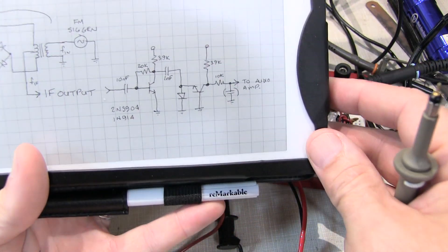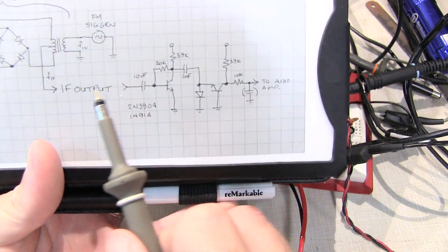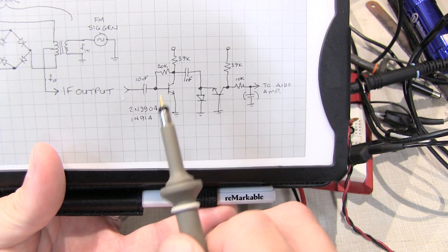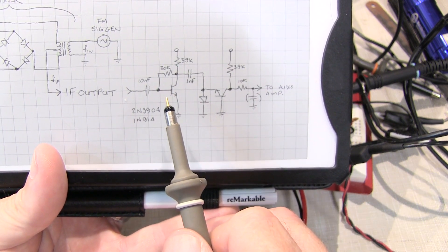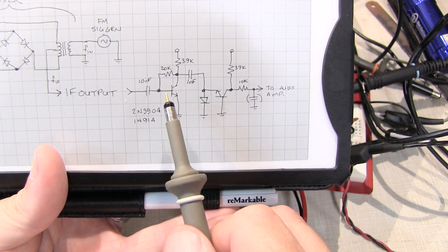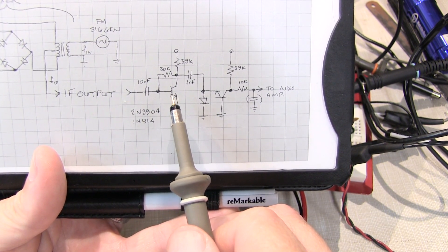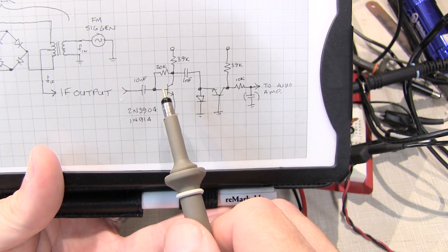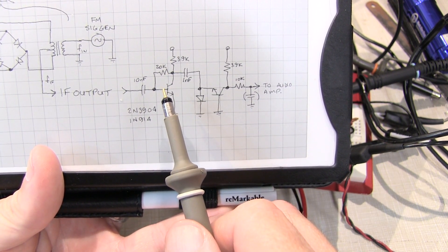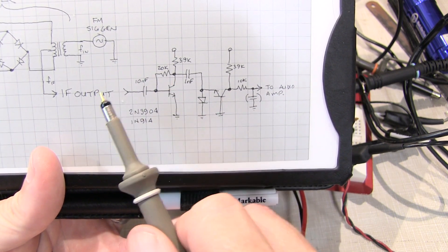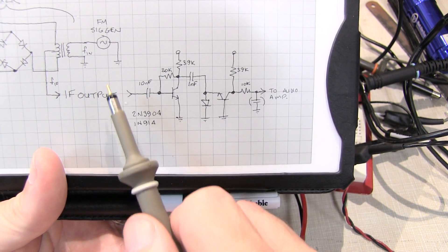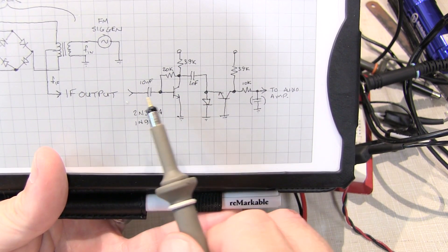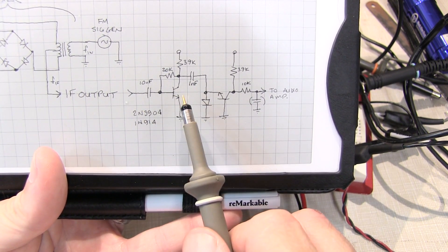The circuit I put together looks like this. We're taking our IF output from our mixer into a simple gain block, a little common emitter amplifier. The reason for that is with most FM receivers you want the signal that you're detecting to be limited or go into limiting, which means amplify it to the point where it doesn't look like a sine wave anymore, it looks more like a square wave. What that does is it makes the detector immune to any amplitude variations of the RF signal. So I've got a fairly high output coming from my mixer so I'm just using one simple single gain block here.